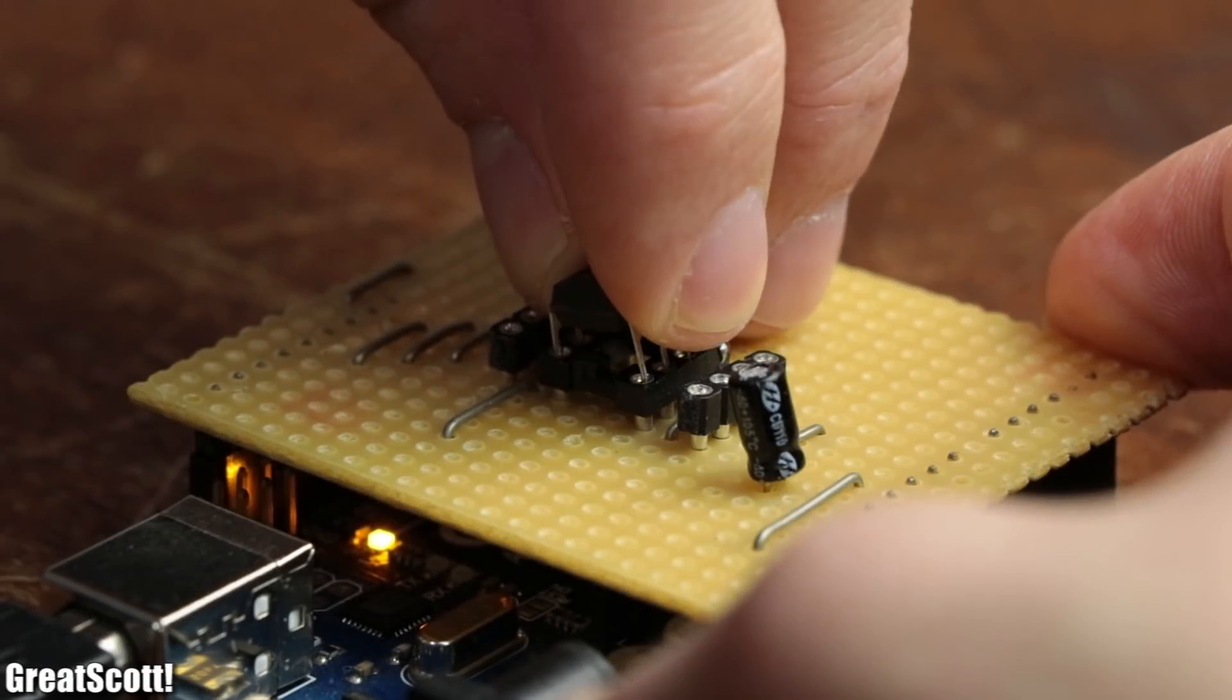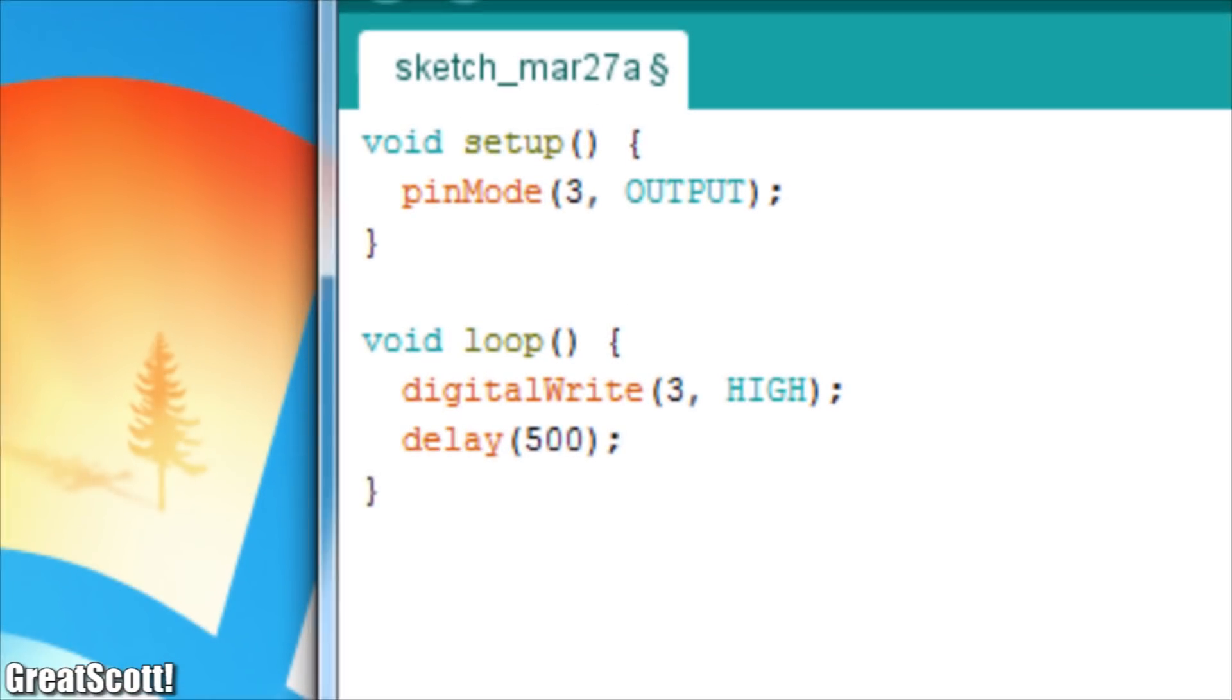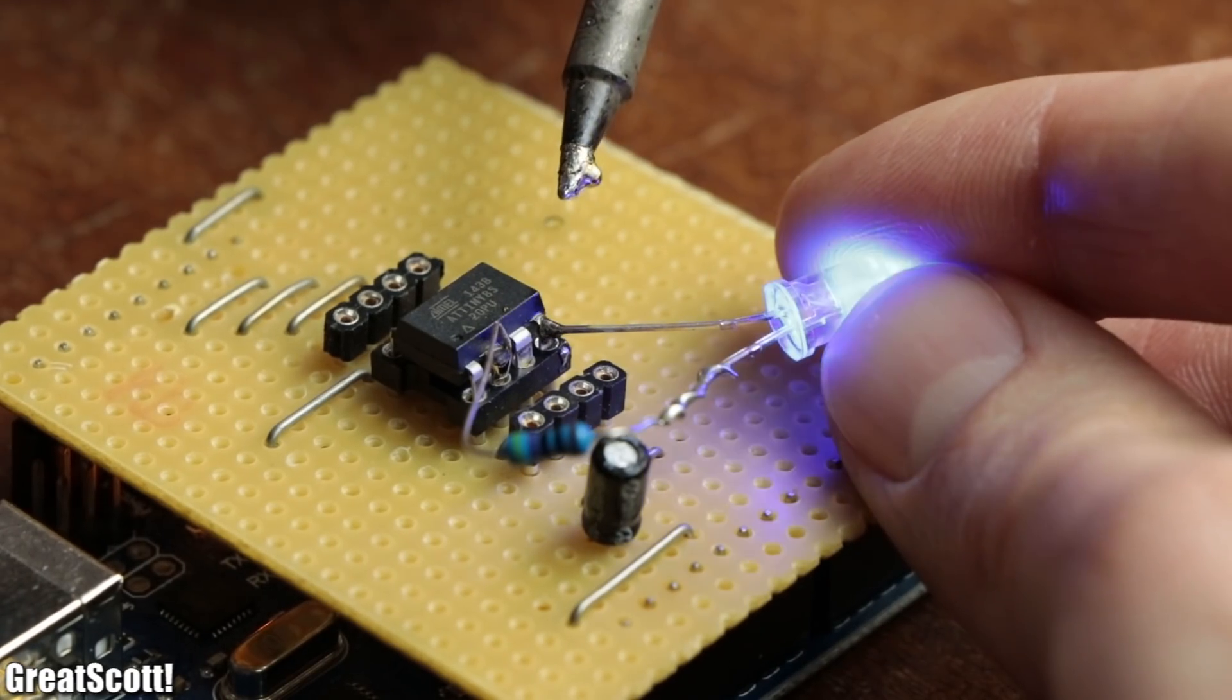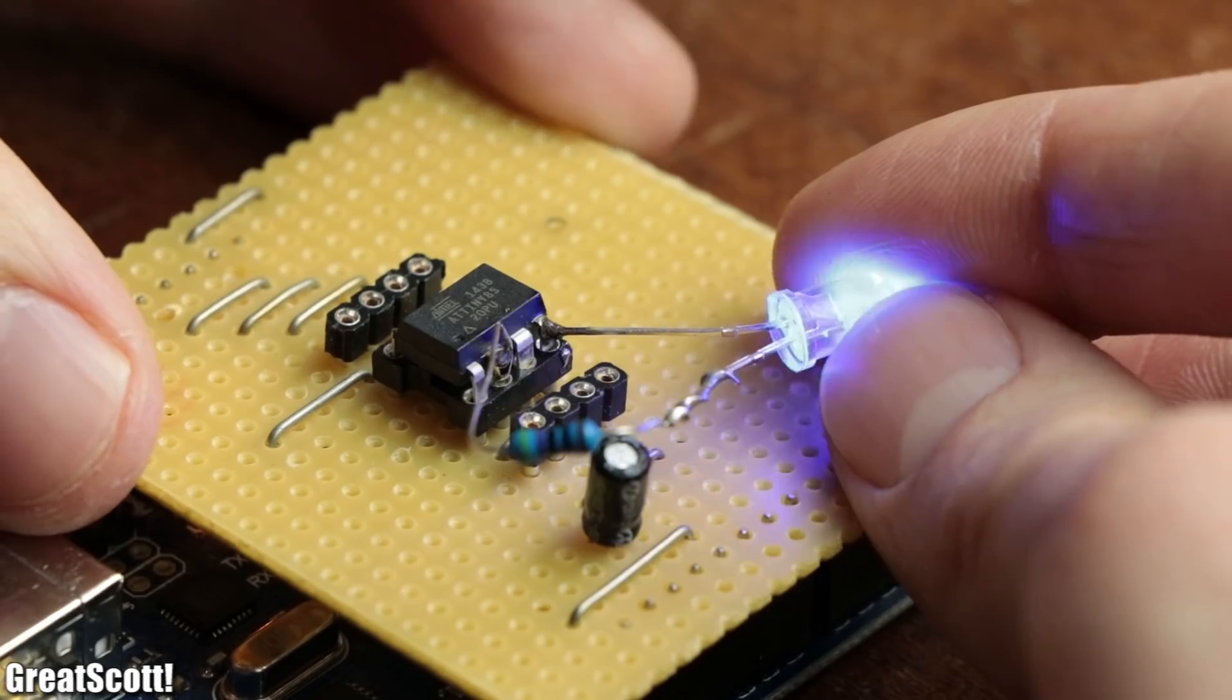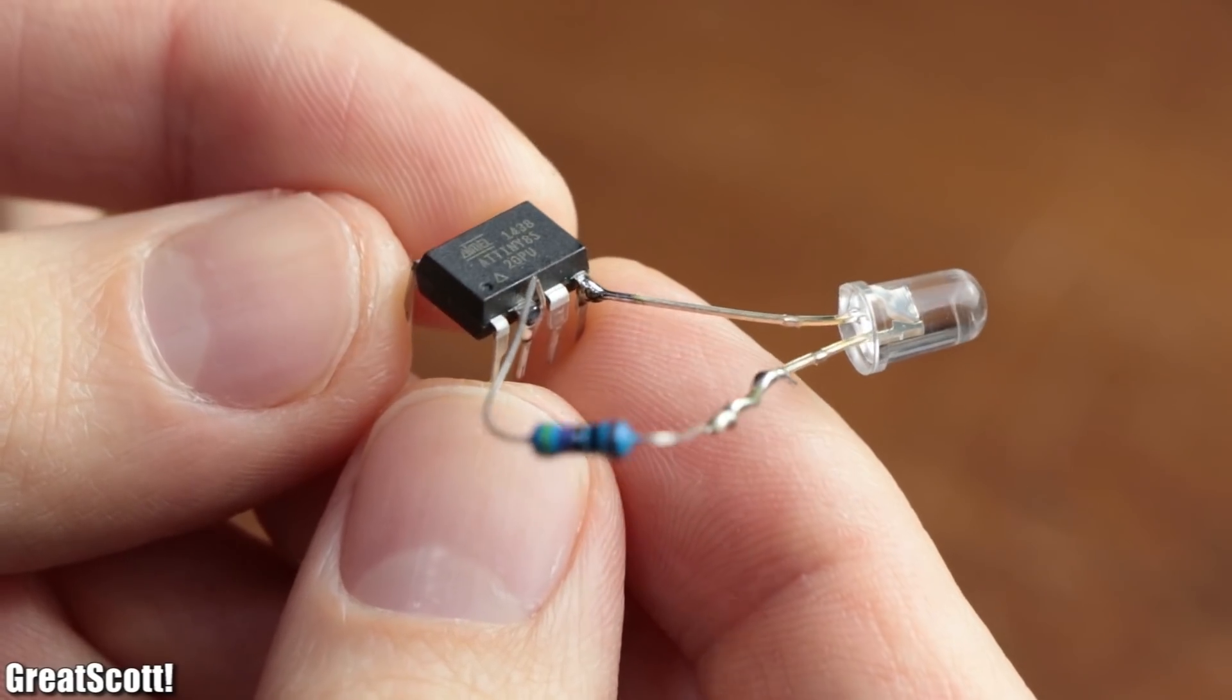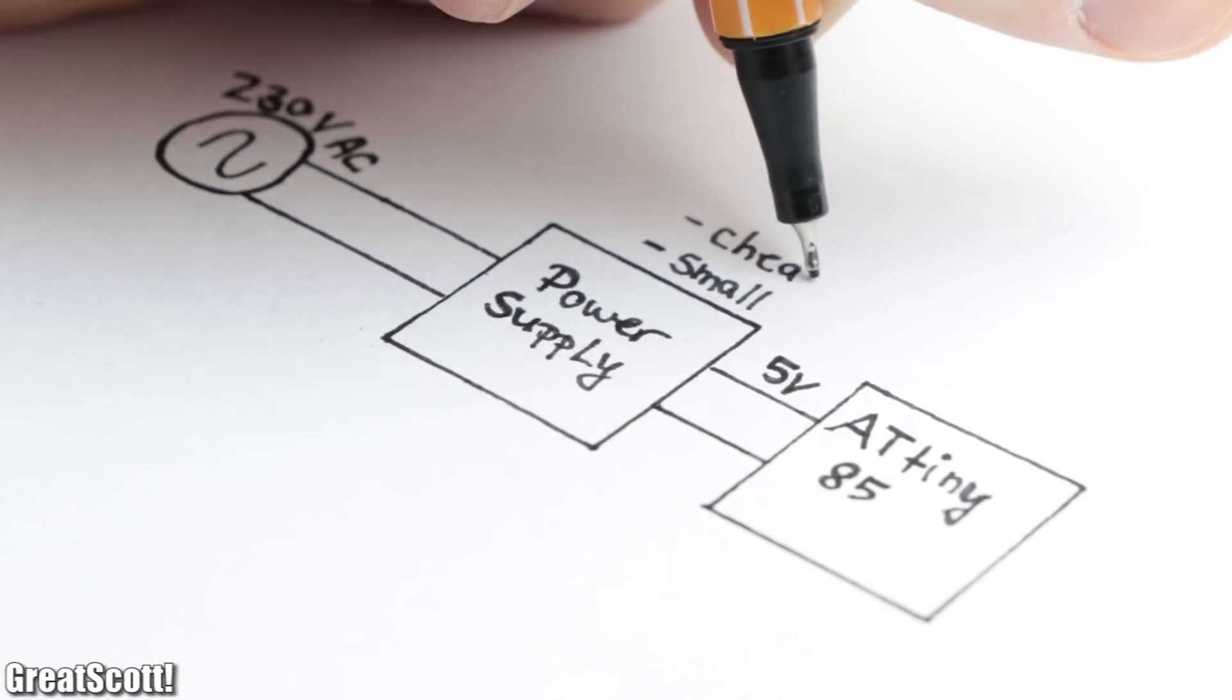I'm currently working on an ATtiny microcontroller project of which I do not want to share any details yet. So as a replacement, let's just upload an LED blink sketch to the ATtiny. Now the main problem is how to power this small ATtiny project through mains voltage while keeping the power supply small and also cheap.